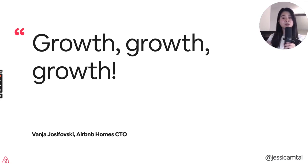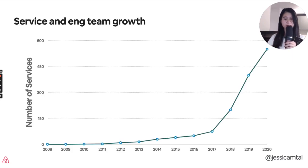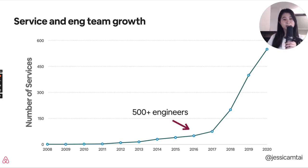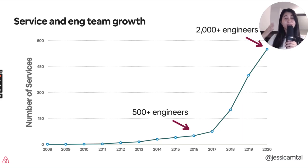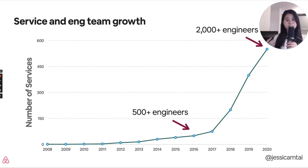Growth has been a driving factor and motivator for our architecture migrations. From this graph, we can see that our service count and engineering team are both growing. In 2016, when we began the migration from Monolith into services, we had around 500 engineers and less than 100 services. Now in 2020, we have over 500 services and around 2,000 engineers. So the needs of our team and the product were changing.